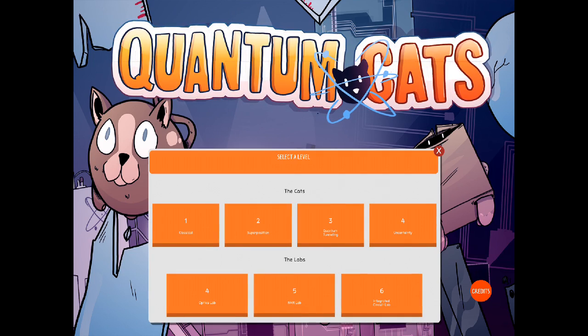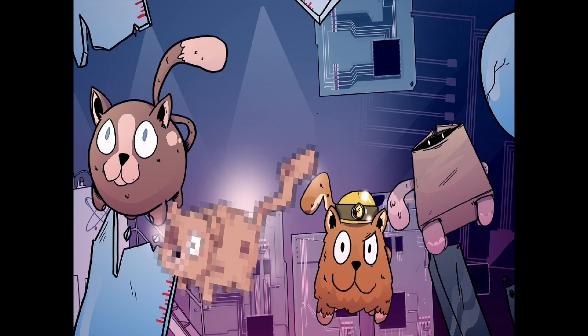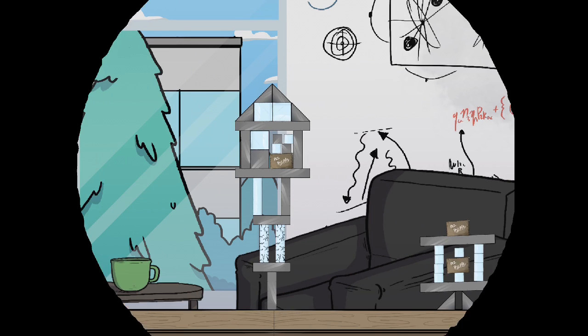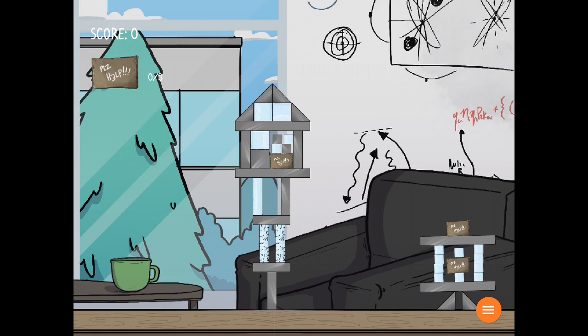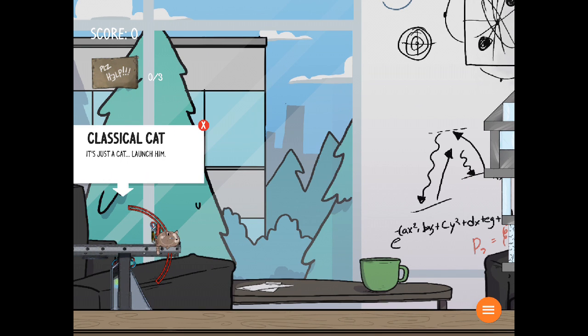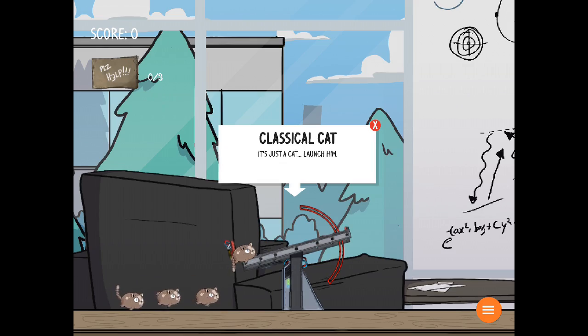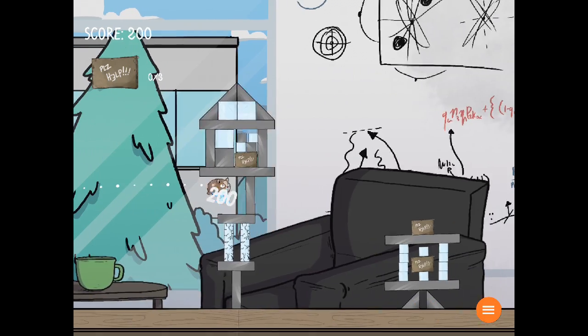Let's start with the first level, which is called Classical. Classical is the word that we quantum people use to mean boring, normal, non-quantum stuff. So this should just be basically a cat which obeys all the normal laws of physics.